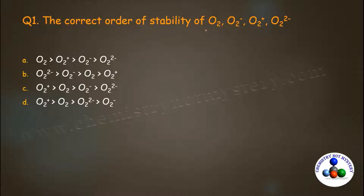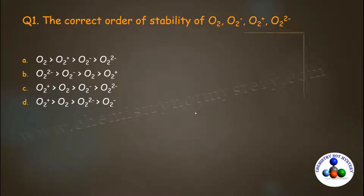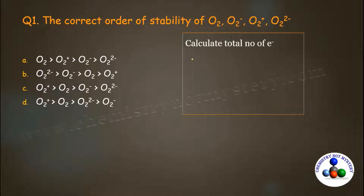The first question asks for the correct order of stability of O2, O2 negative, O2 positive, and O2 2- ion. Bond order is directly proportional to the stability of the molecule — higher the bond order, more stable will be the molecule. For bond order calculation, first you have to calculate the total number of electrons. Let's calculate the total number of electrons in the O2 molecule.